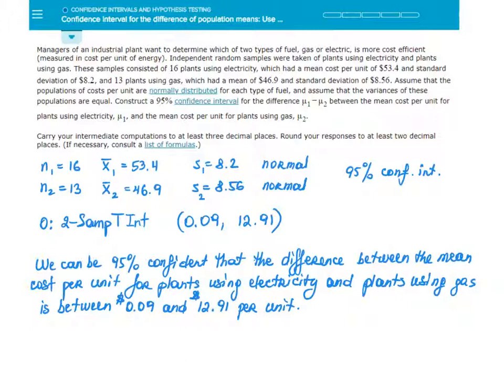Assume that the populations of costs per unit are normally distributed for each type of fuel and assume that variances of these populations are equal. Construct a 95% confidence interval for the difference μ₁ - μ₂ between the mean cost per unit for plants using electricity μ₁ and the mean cost per unit for plants using gas μ₂.